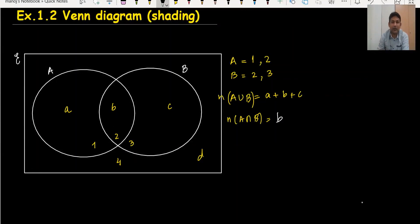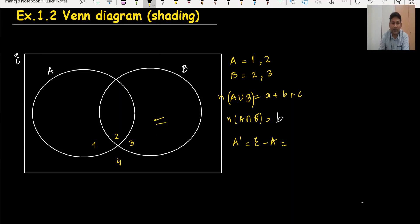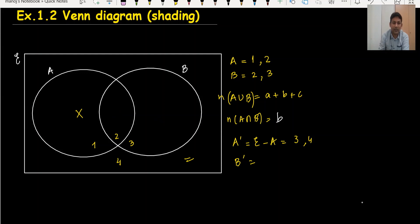When talking about A complement, A complement means universal set minus A. So A complement means everything without A. The required region for A complement is area 3 and 4 — the other two areas are cancelled out. For B complement, B will not be there, so the required region is 1 and 4.